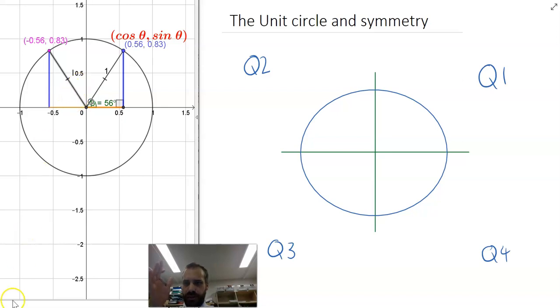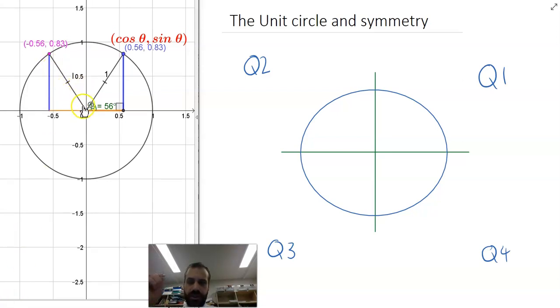Now, you should note a couple of things about it. Obviously, the hypotenuse is still one. This is the unit circle, and that is the radius of the unit circle. Notice that this is the same height as this, which means that the y-coordinate of this purple point is the same as the y-coordinate of this blue point.